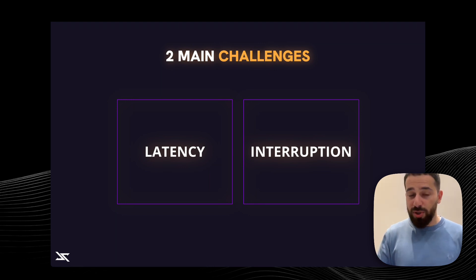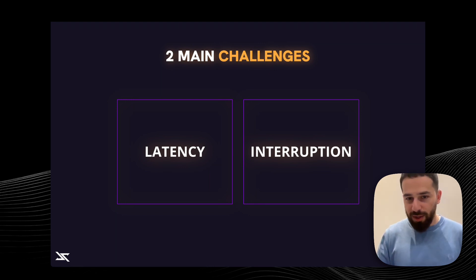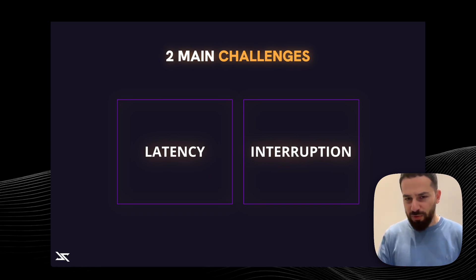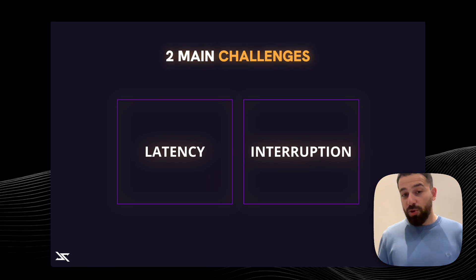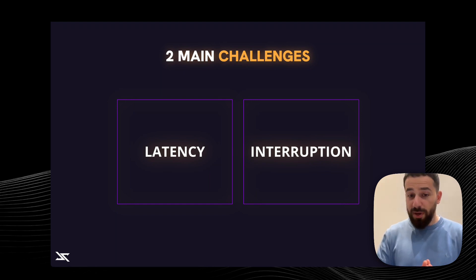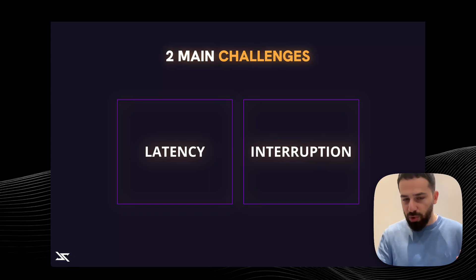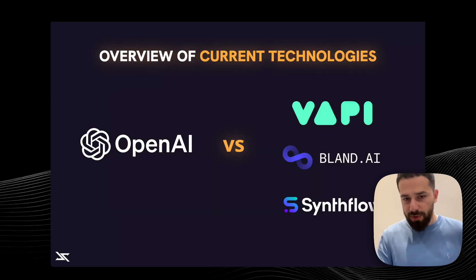The other problem is interruptions. Whenever you speak to one of those AIs and you interrupt it, that's it — it goes completely south. It starts hallucinating, it starts mixing up information, it doesn't understand what you're saying. Those are the two main problems, and we figured out some ways to optimize and essentially completely solve them, which I'm going to go over in this video.